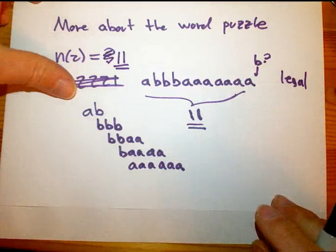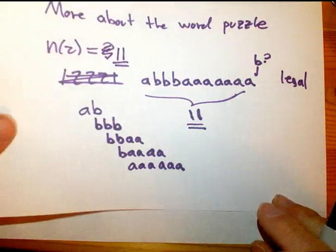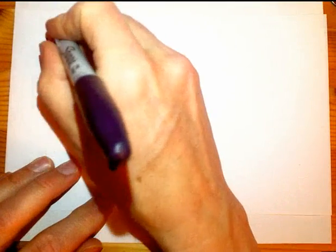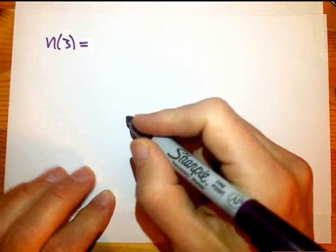So you might wonder, what is this doing in the Ridiculously Big Number video? Well, we'll see eventually. The next thing you could ask is, what is N of 3 if you allow yourself three different letters?